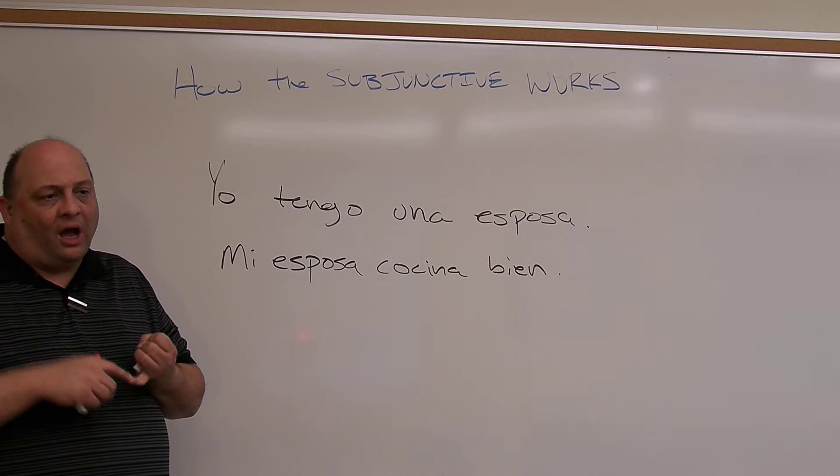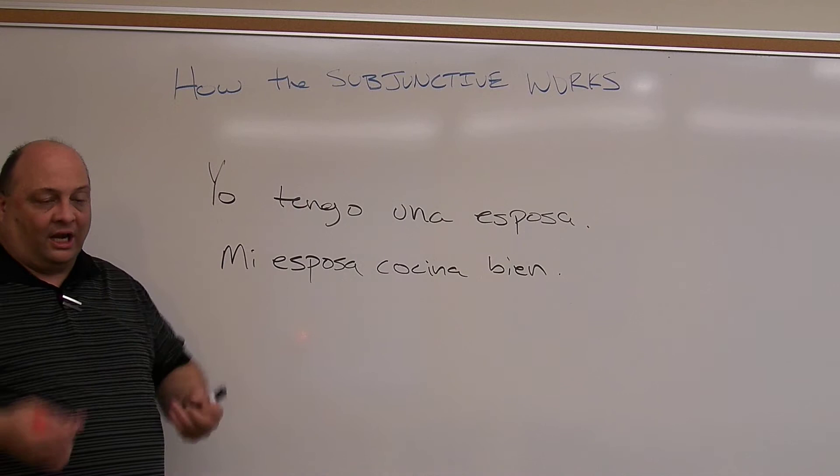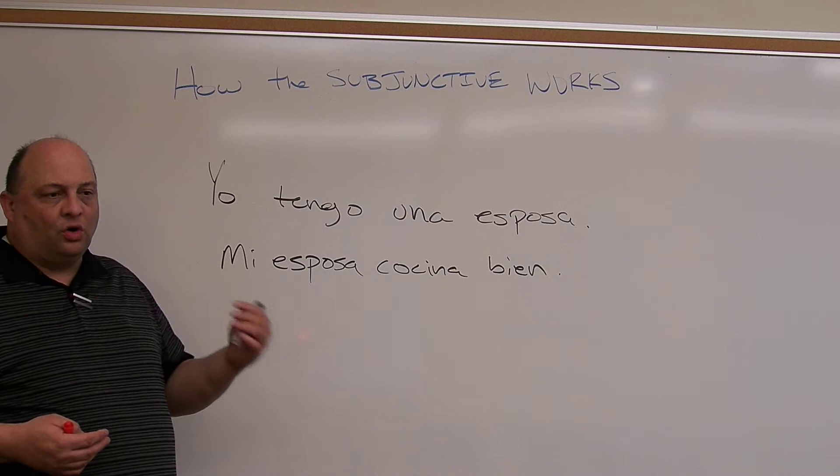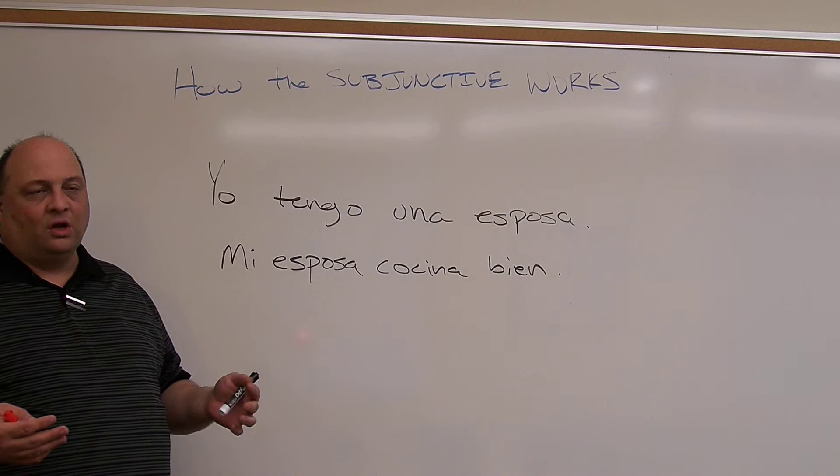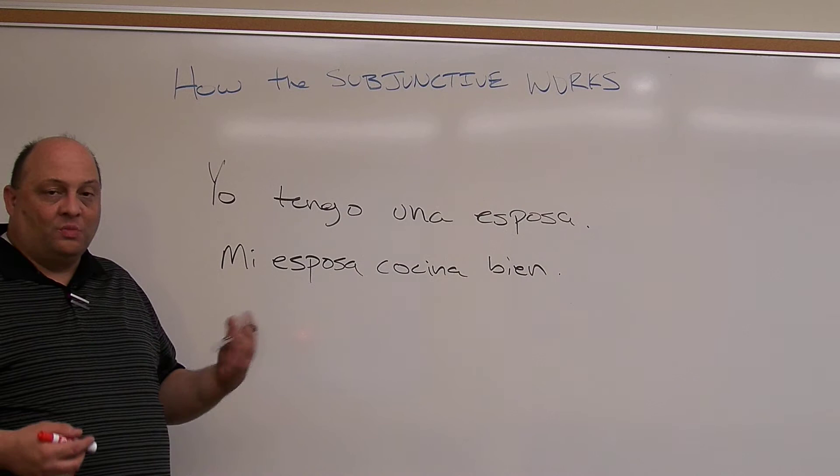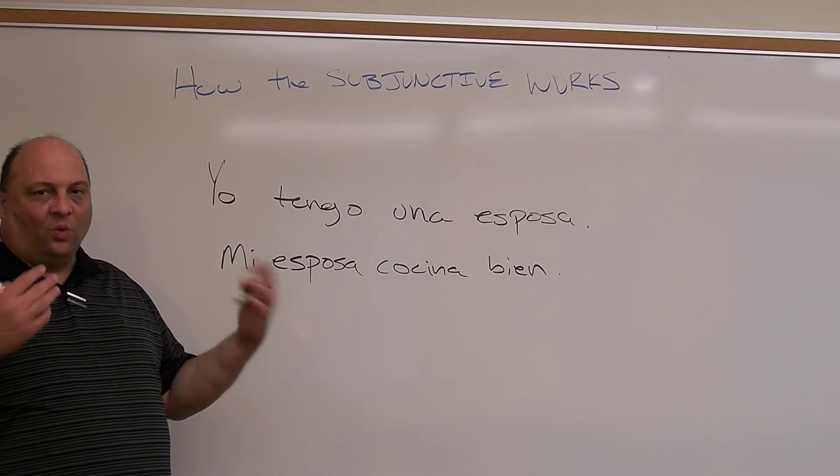That's the infinitive part. The second part is when we conjugate the verb — it tells us who does the action. Yo como, tú comes, él come. That tells us who does it. Then we've also learned about tense, or when the verb happens. Yo comí, tú comiste, él comía, nosotros comíamos — that's telling us when it happened.